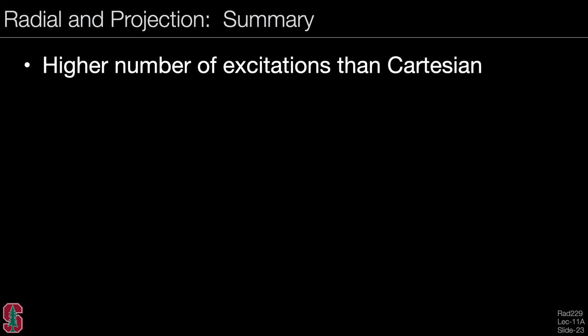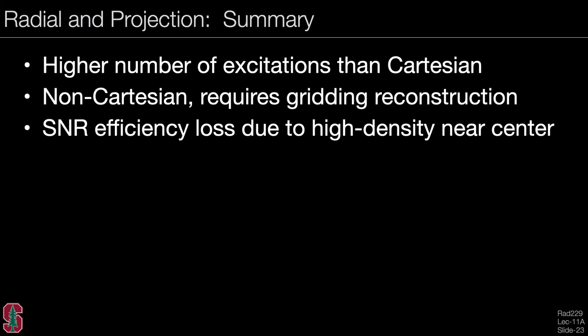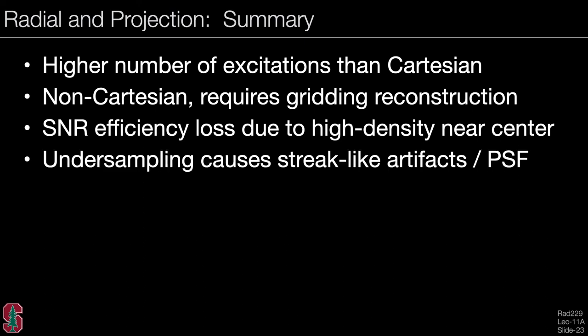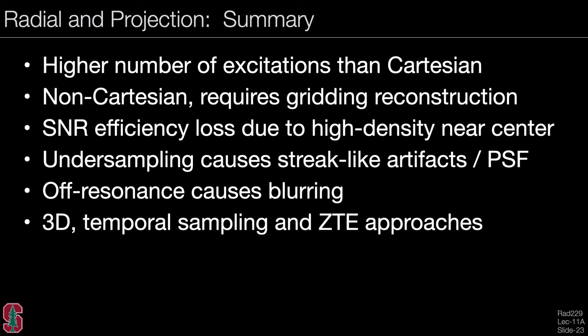In summary, radial and projection imaging require more excitations than Cartesian imaging to sample around a circle in k-space. Because this is non-Cartesian, a special reconstruction such as gridding is required. The increased excitations and sampling density variation reduce SNR efficiency. Undersampling causes streak-like artifacts reflected in the point spread function. Off-resonance causes blurring rather than a shift as in Cartesian imaging. Variations include 3D sampling, temporal sampling schemes, and zero-echo-time approaches.